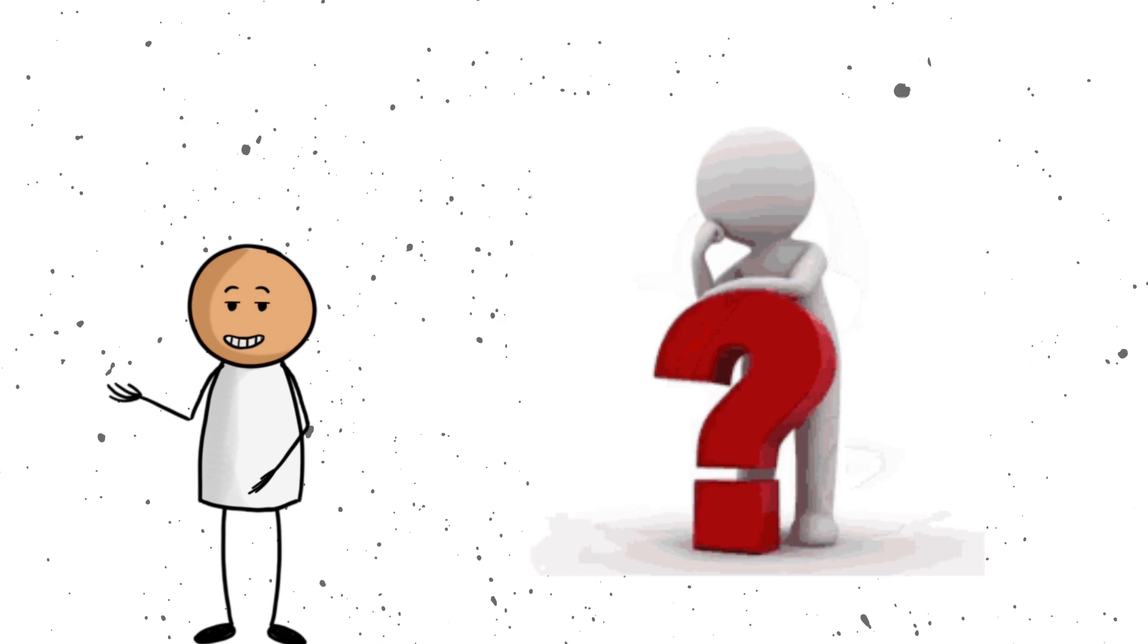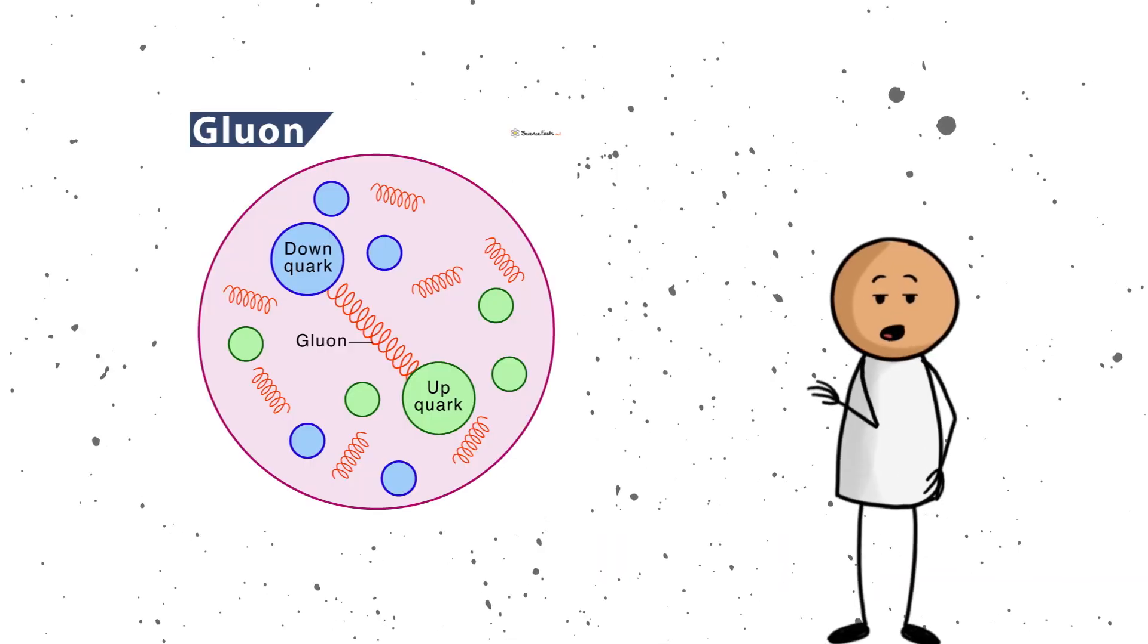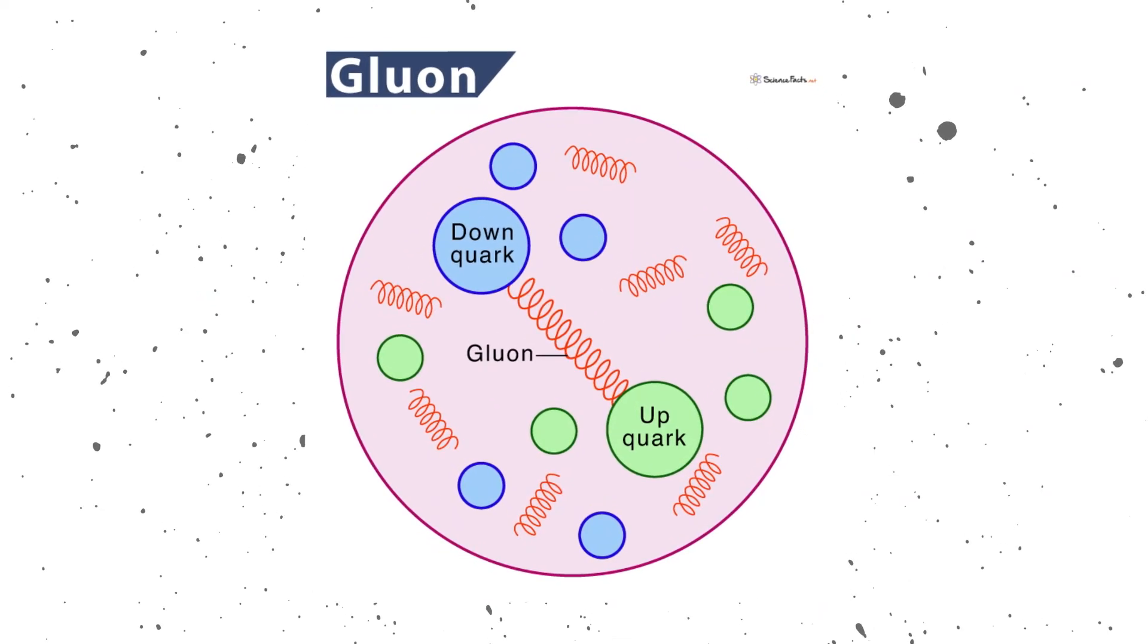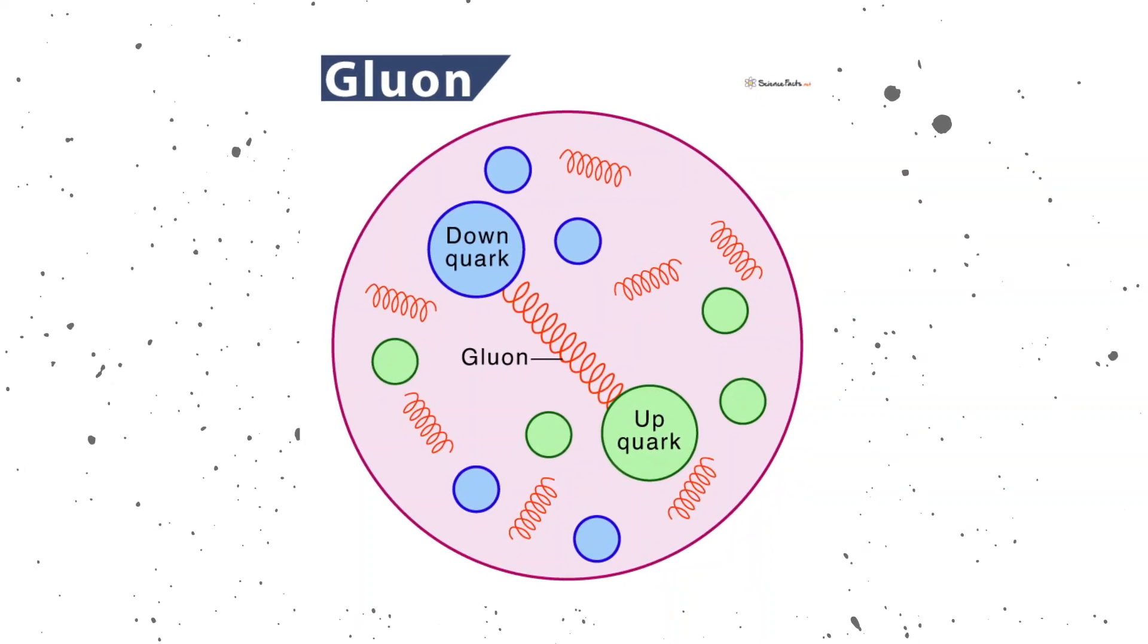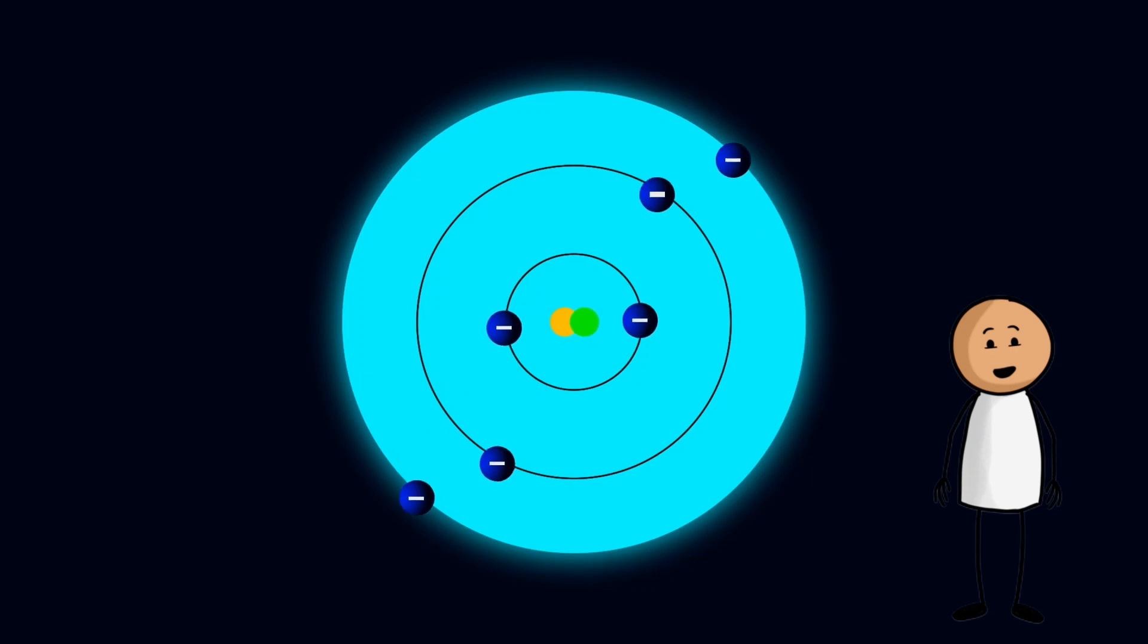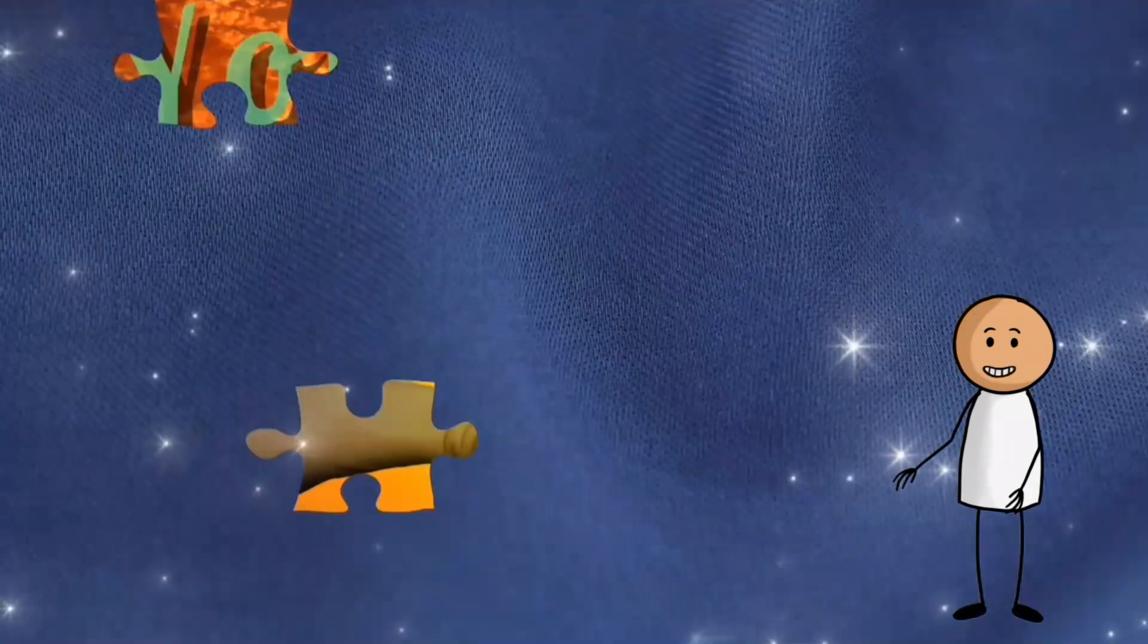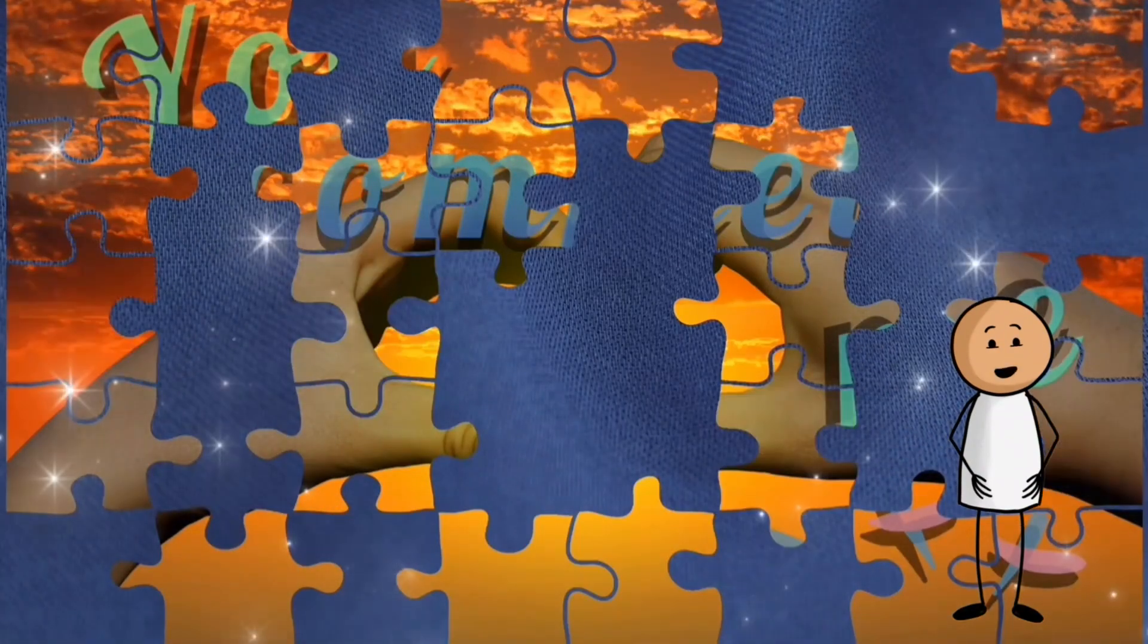So the big question became, where does the rest of the spin come from? Some scientists think it might come from gluons, which are the particles that glue quarks together. Others think it might come from the way quarks and gluons move around inside the proton, like tiny dancers twirling in complex patterns. This puzzle has been dubbed the Proton Spin Crisis, and it has kept physicists busy for decades. It is like having a puzzle with most of the pieces missing, and every time you think you've found one, it slips away again.